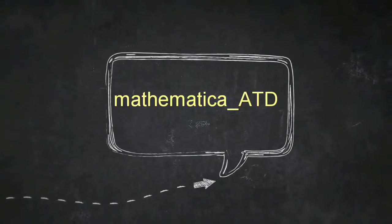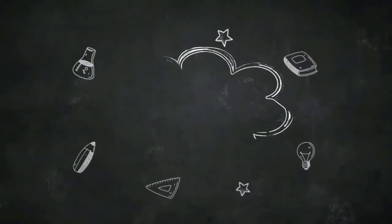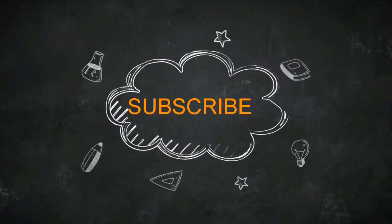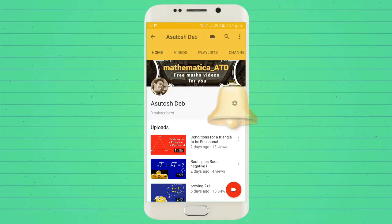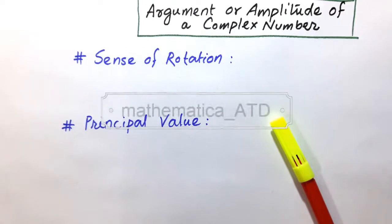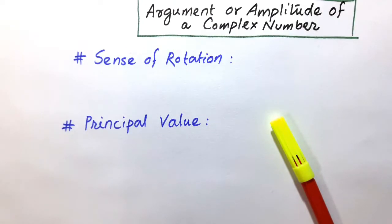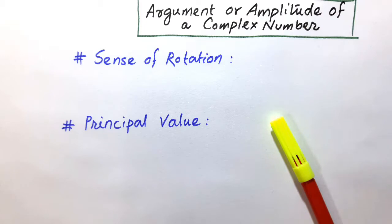Most welcome to the channel Mathematica ATD. The topic is argument or amplitude of a complex number. The amplitude of any complex number is defined as the inclination of the complex number with respect to the positive direction of the x-axis on the argand plane.